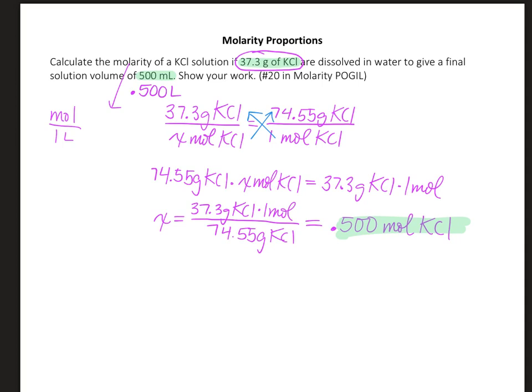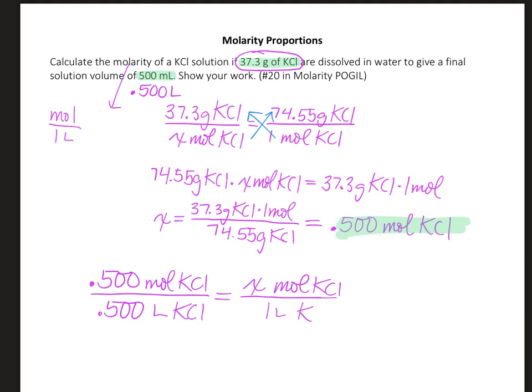So the 0.500 moles of KCl we just calculated is going to be dissolved in 0.500 liters of KCl solution. Now we know every molarity is going to give us a certain number of moles per one liter of that solution.